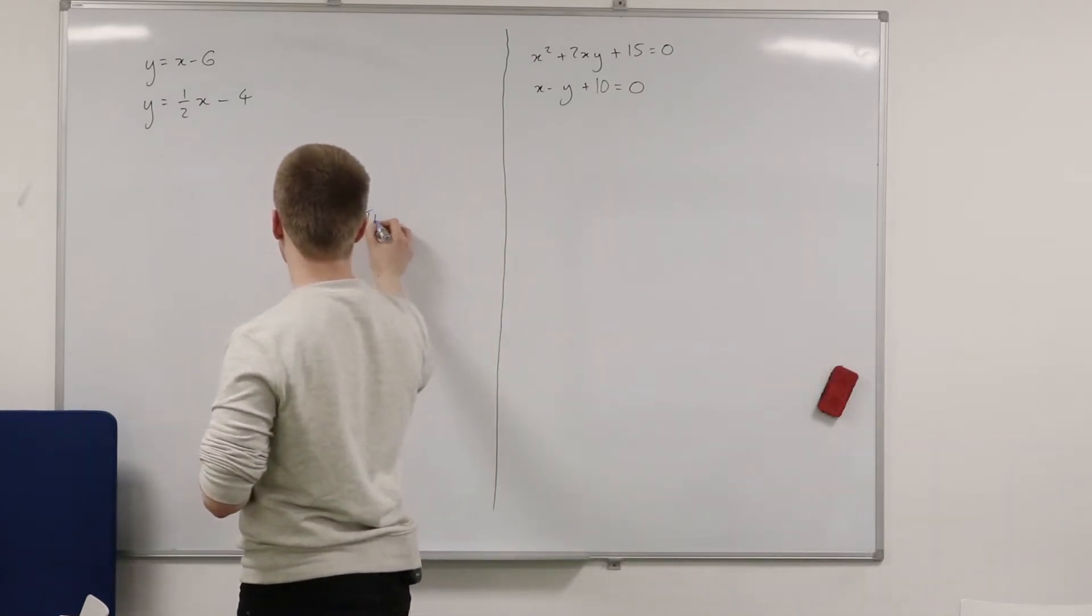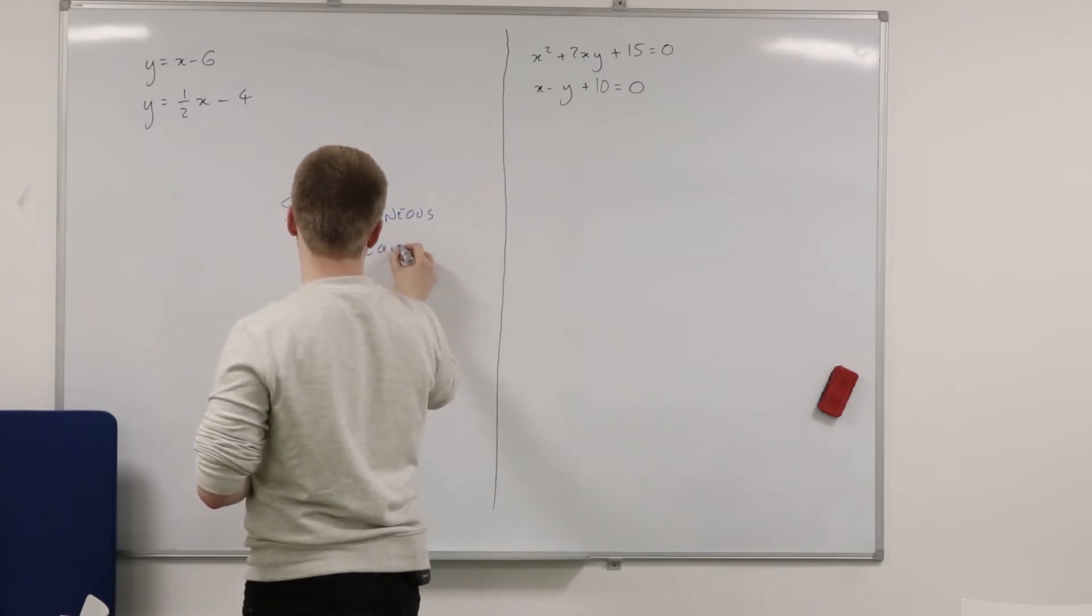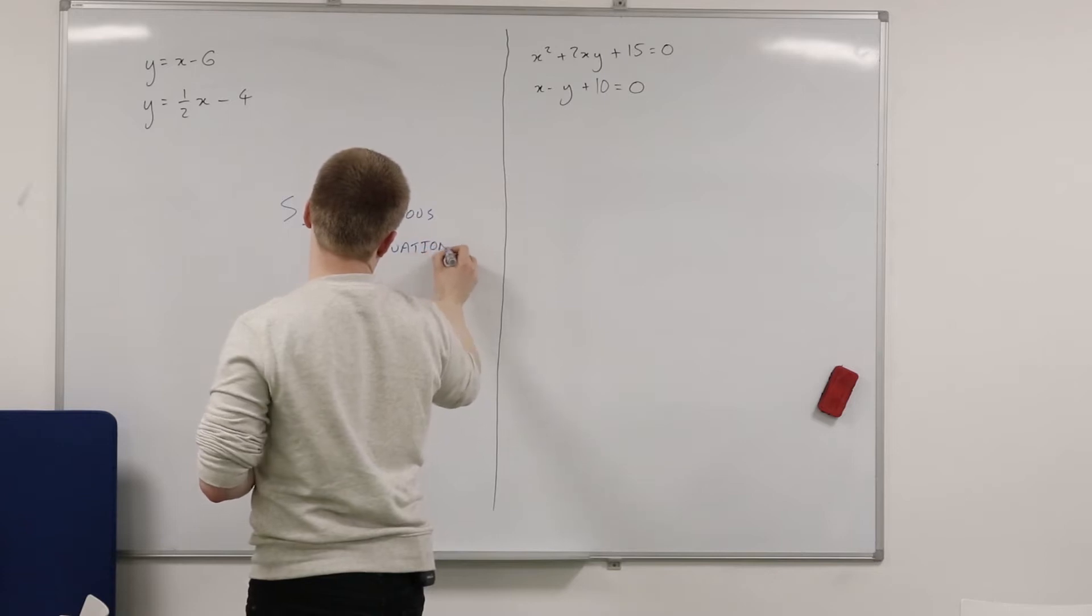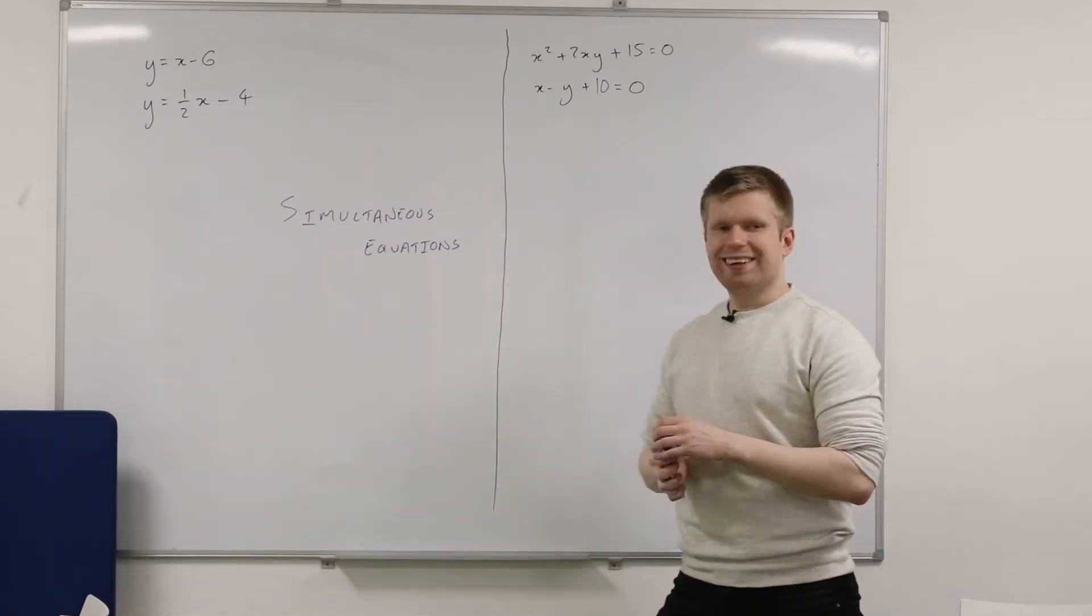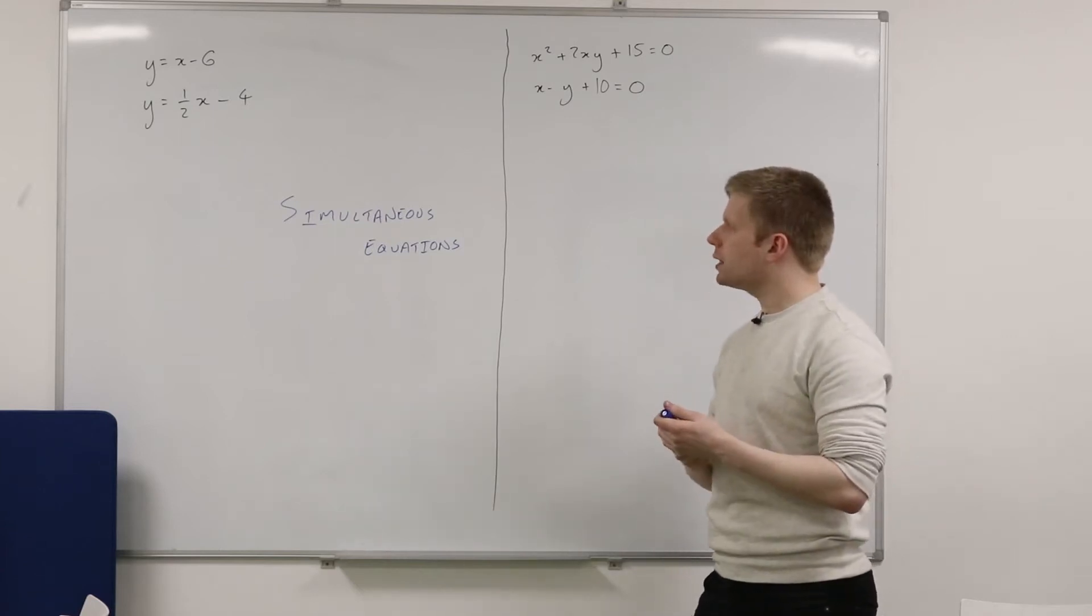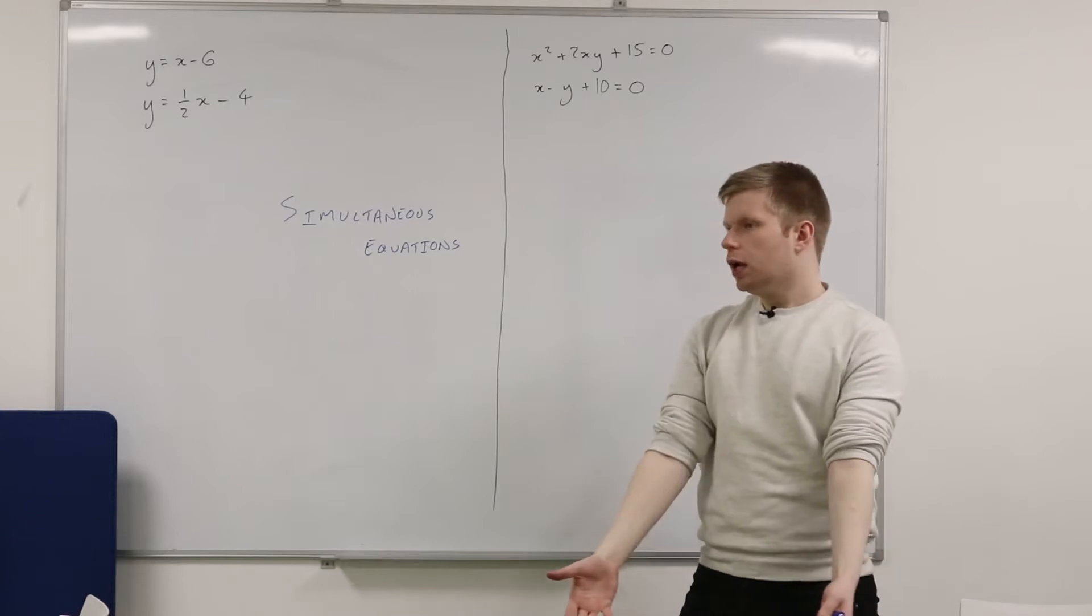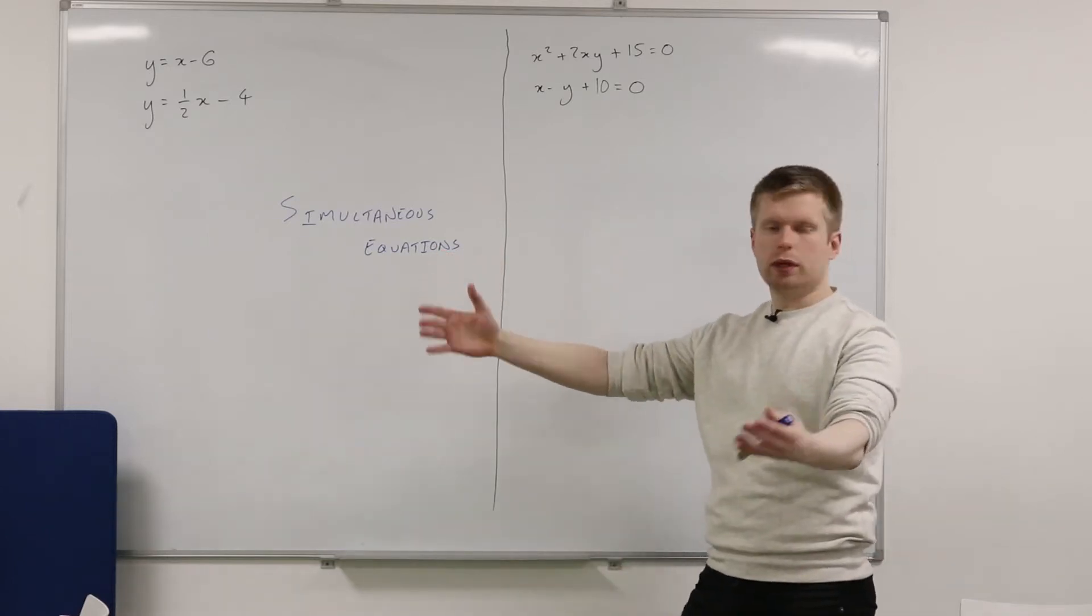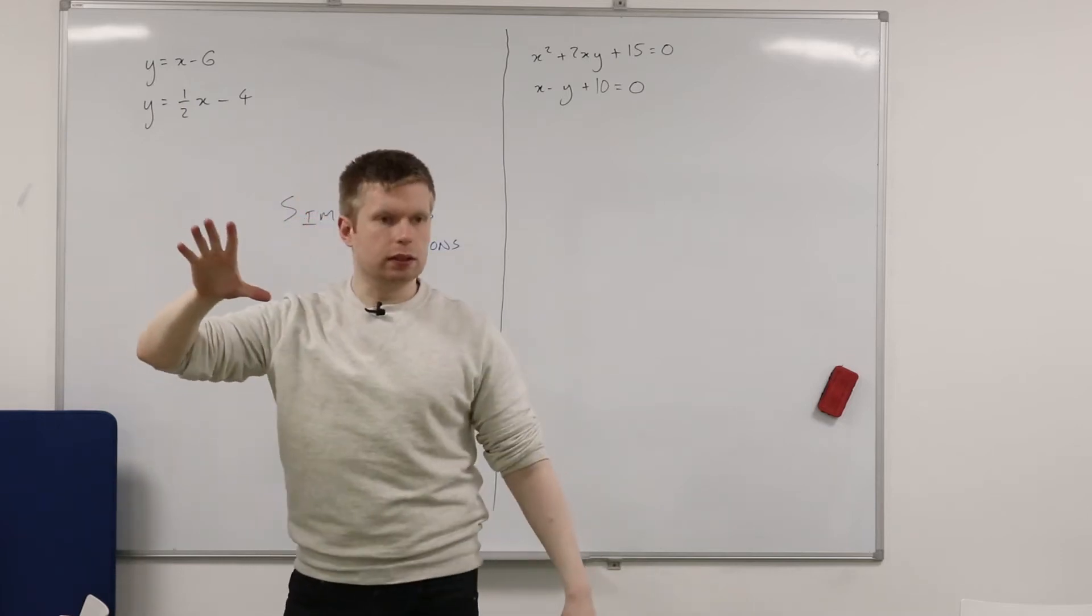So, we are starting a new theme. It is called simultaneous equations. Now, who in here has met simultaneous equations before? Yeah, so some of you have already. Now, are you happy we've met the word equations before? It's just basically saying one thing is equal to another. For example, Y is equal to X minus six.